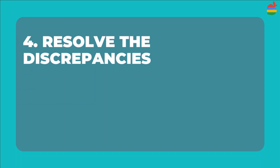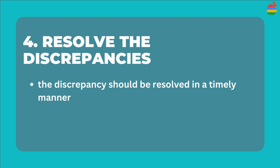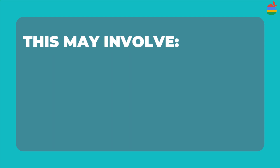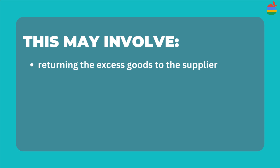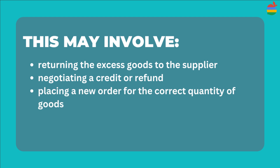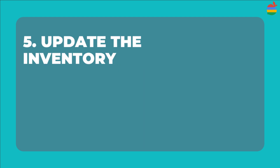Number four, resolve the discrepancy. The discrepancy should be resolved in a timely manner. This may involve returning the excess goods to the supplier, negotiating a credit or a refund, or placing a new order for the correct quantity of goods.